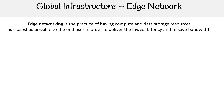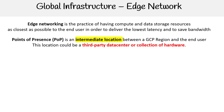Hey, this is Andrew Brown from ExamPro, and we are looking at Google Cloud's global infrastructure edge network. Edge networking is the practice of having compute and data storage resources as close as possible to the end user in order to deliver the lowest latency and to save bandwidth. When we're talking about edge networking, we're always talking about Points of Presence, or POPs.